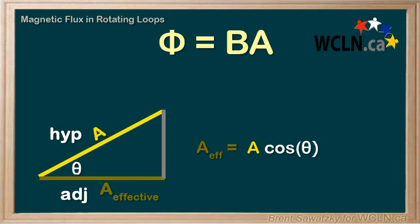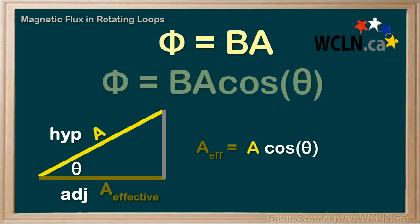Thus, for situations where the magnetic field is not passing perpendicular through the plane of our loop, our equation for flux could be written as the flux equals B times, and instead of just A, a more effective A, that is A cos theta, where theta is the angle of our loop from our perpendicular plane.